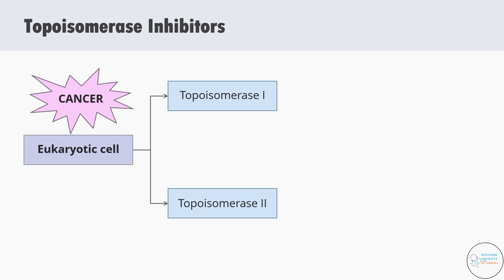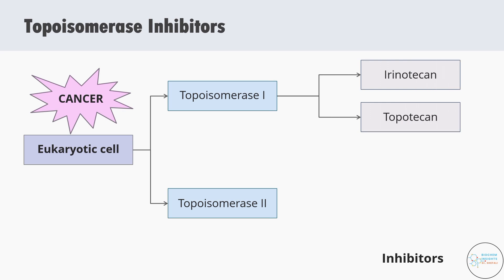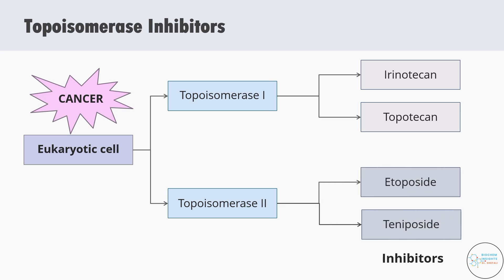For Type 1 topoisomerase, the cancer drugs used are irinotecan and topotecan — chemotherapeutic drugs that inhibit topoisomerase 1 in cancer cells. For Type 2 topoisomerase in eukaryotic cells, the inhibitor drugs are etoposide and teniposide.